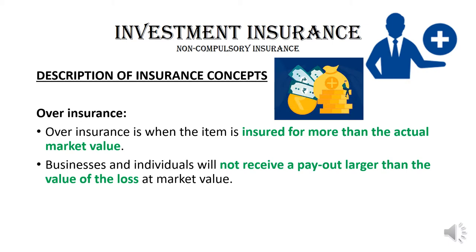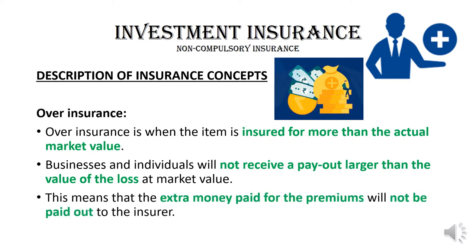Over-insurance is not clever — it pushes up your premium, costing you more per month or per year, and when the risk actually happens, you will not receive the amount the item was insured for because that is not what the asset is worth. You are basically losing money by over-insuring your assets. The insurance company will not refund the extra premiums you paid. That is how they make their money — by taking people's premiums even if those premiums will not be paid back.